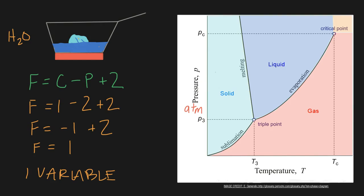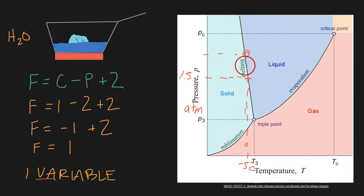Let's look at it another way. Let's say we don't know the pressure in our house, but we measure the temperature of this ice-water mixture and it's negative five degrees Celsius. Because we only need to define one variable when two phases exist together, we already know everything else just by measuring that temperature. Looking at our graph, we go up from negative five, cross the two-phase line, and we know the pressure — let's say it's 1.5 atmospheres. We only needed to define one independent intensive variable and we can figure out everything else.